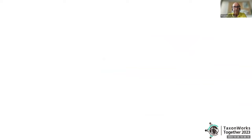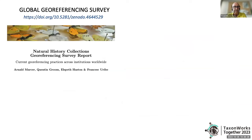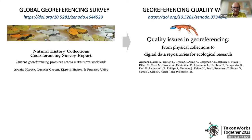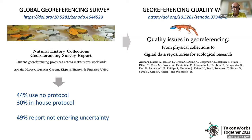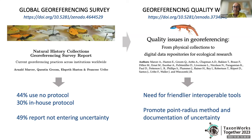We wondered why georeferencing data is still poor if standards and protocols have been available for many years. To shed light on the reasons, we conducted a global survey on georeferencing practices and organized an international workshop where these matters were discussed and recommendations for action followed. In the survey, 44% of respondents reported not using any protocol and 30% only an in-house developed protocol. Furthermore, 49% said they were not reporting uncertainty at all.